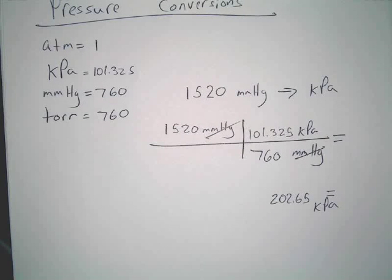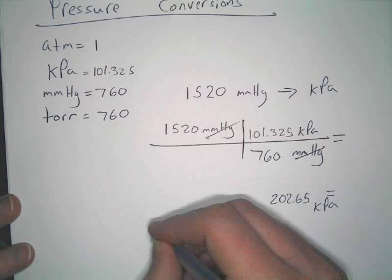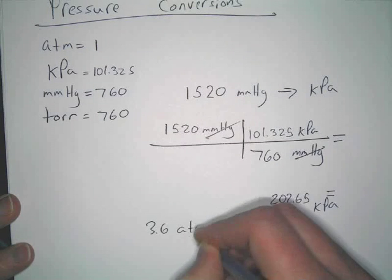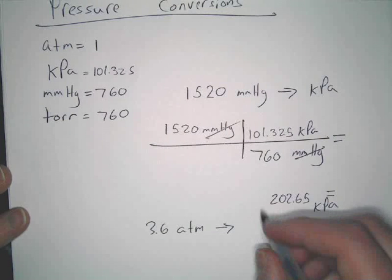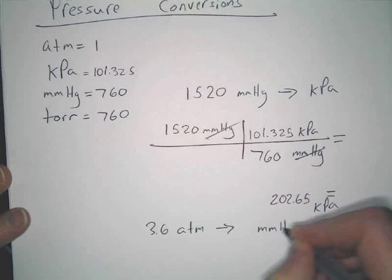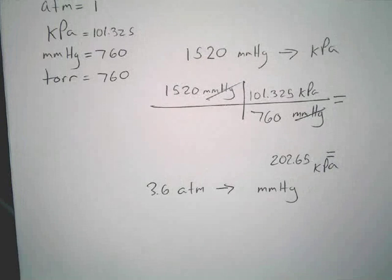Is it always going to be those numbers? No. Let's do another one. Let's do 3.6 atmospheres, and we're going to convert that to millimeters of mercury. Truthfully, you might never really see torr as a unit. Millimeters of mercury is more common, but I guess torr is used a lot, too. So never mind.